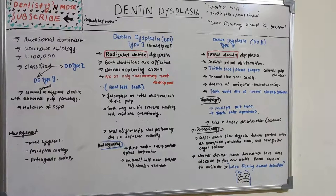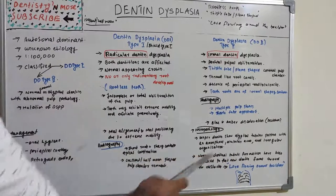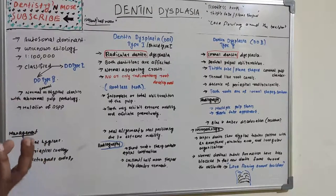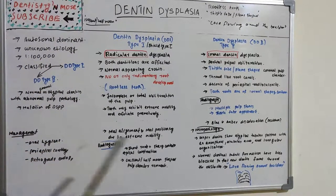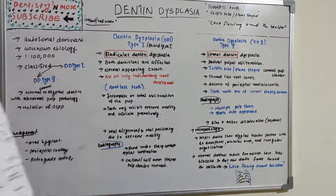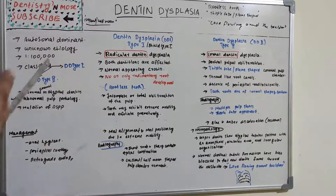Histopathologically, the deeper dentine shows an atypical tubular pattern with an amorphous atubular area and irregular organization. The key descriptive feature is 'lava flowing around boulders.' Normal dentine tubule formation occurs, but blockades are present, so the tubules form around these obstacles — resembling lava flowing around boulders when a volcano erupts. This gives the characteristic histopathological appearance seen in cross-section.